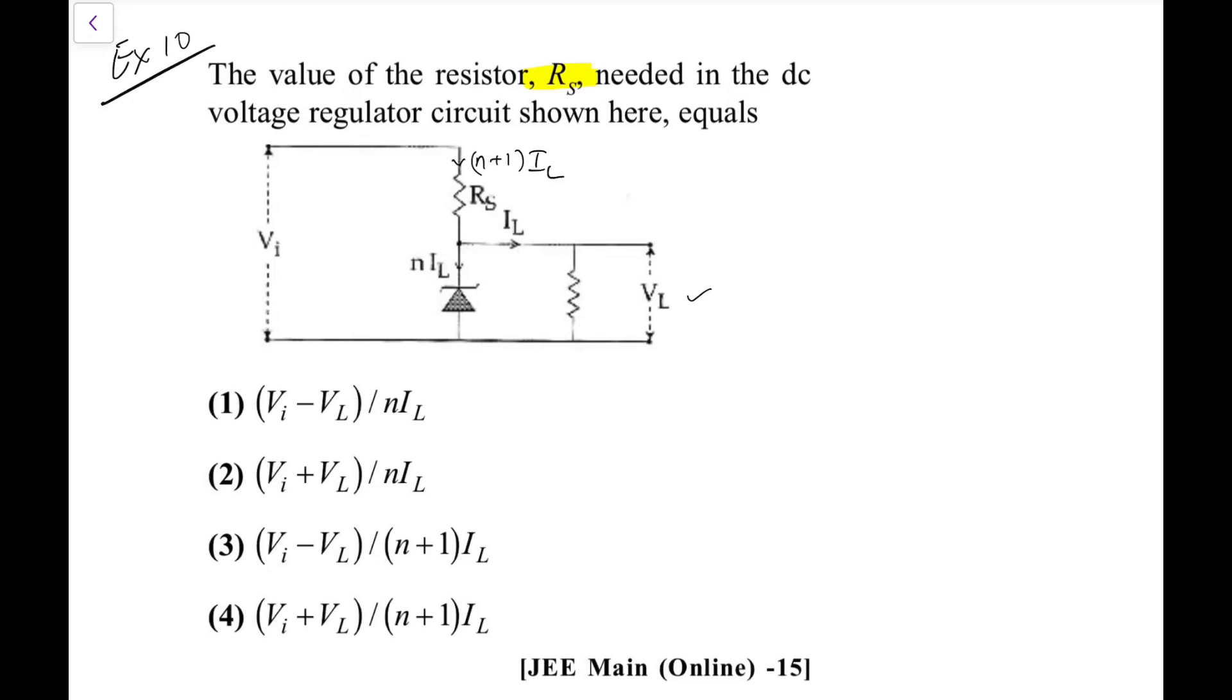So what is the value you require? So this is V_I, what I can make it out, delta V across R_s would be equal to V_I minus V_L, and the current I know. So what we need, the value of resistor would be delta V by I, that is V_I minus V_L upon n plus 1 I_L, that is what you get.